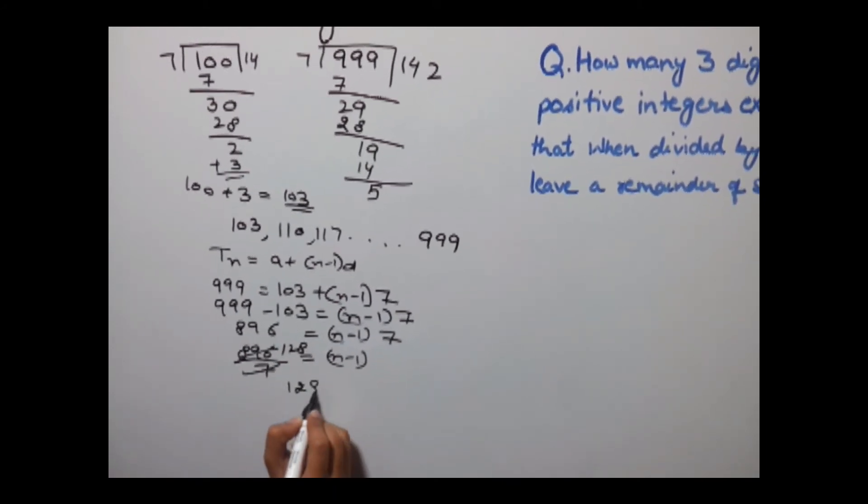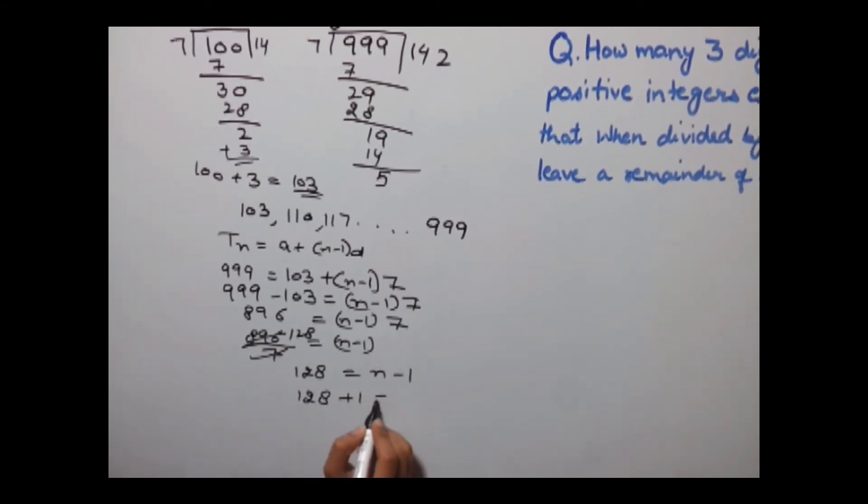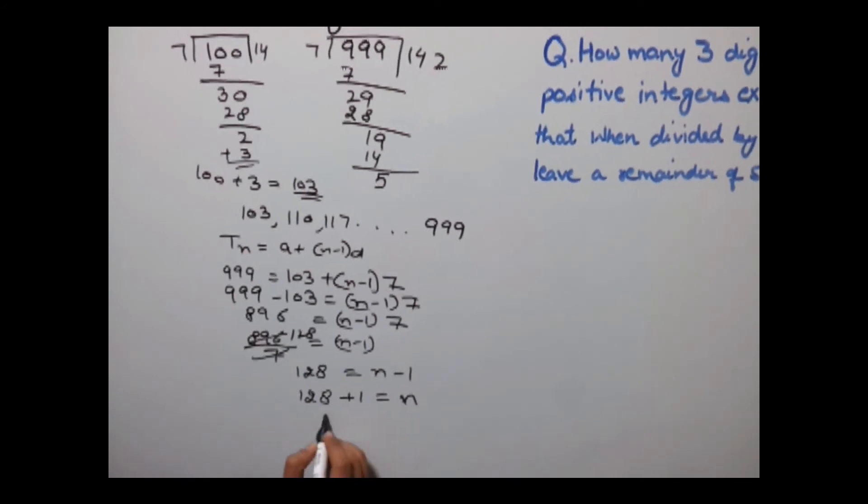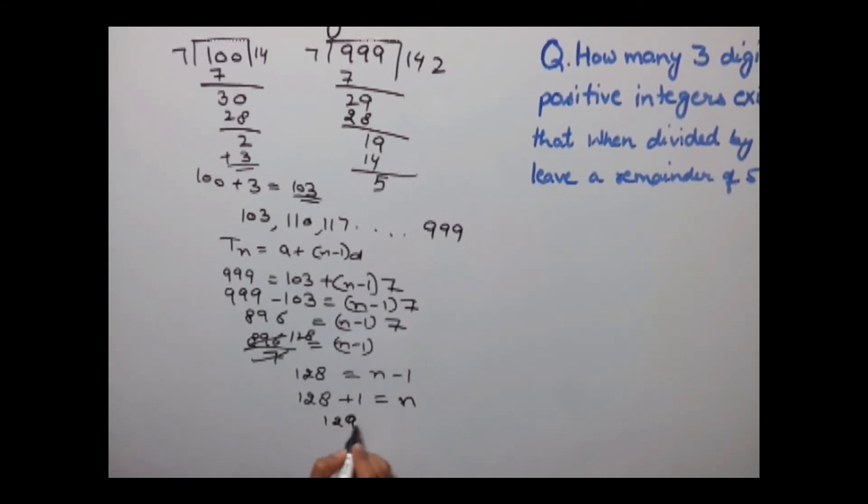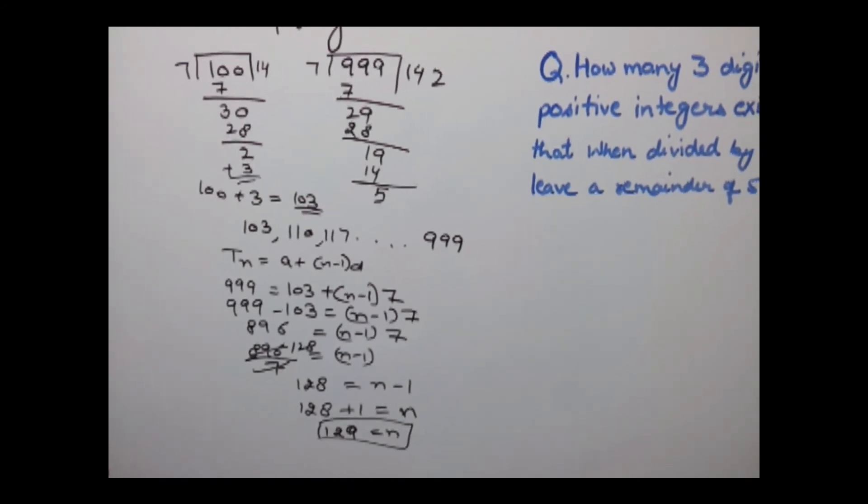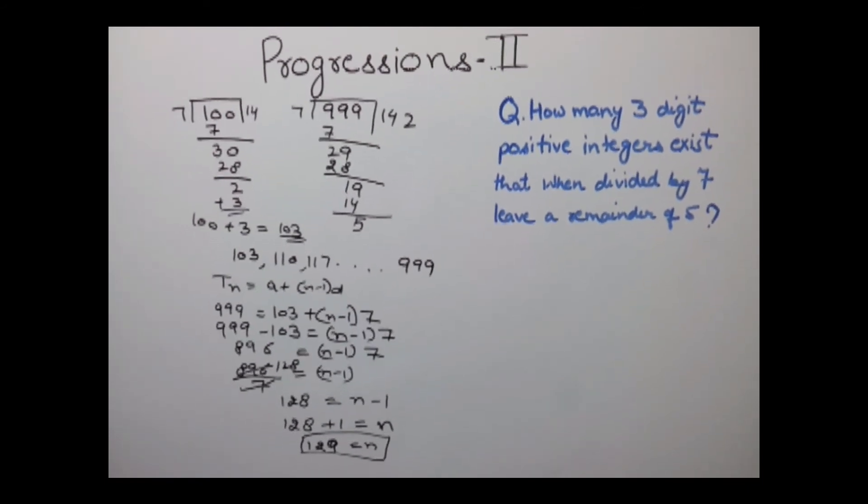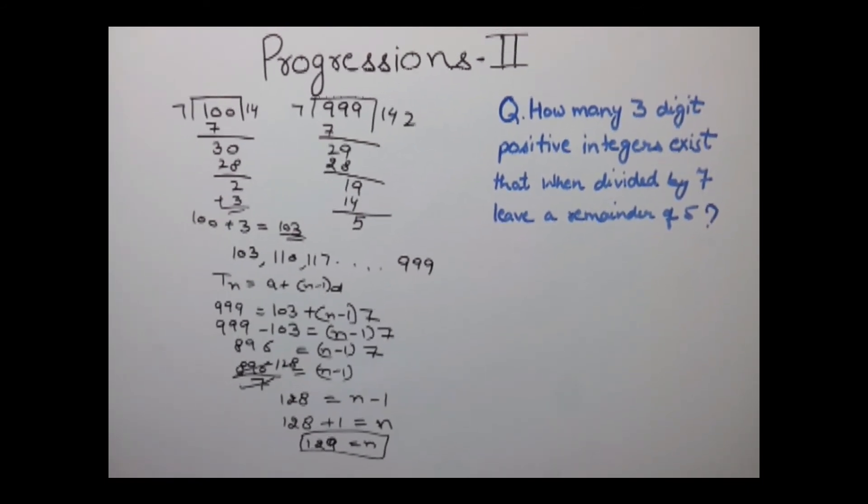Now 128 = n-1, which equals 128 + 1 = n. So the value of n is 129.